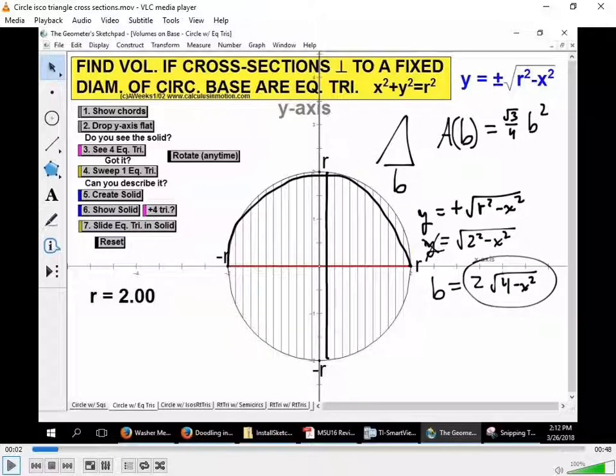And this is when we use the integral. The integral of this formula, rad 3 over 4 times B squared. And what is B? B is 2 square root of 4 minus X squared, DX. And so from what X to what X are we using to find the volume of the solid? Negative 2 to positive 2. That will give you the volume of this shape.